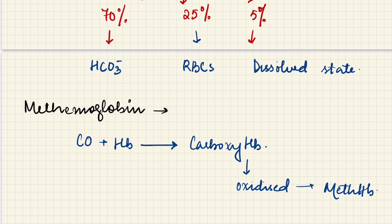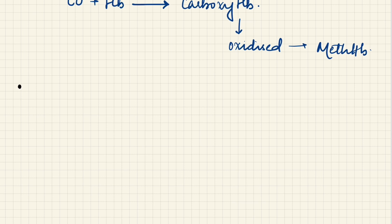Now some important questions that have been asked: one gram of Hb carries how much oxygen? The volume has been asked. One gram of hemoglobin carries—remember—1.34 ml of oxygen. This question has been asked.